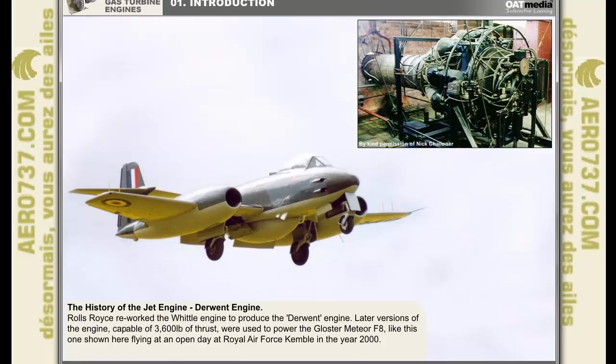Rolls-Royce reworked the Whittle design to produce the Derwent engine, an example of which is depicted here. This engine was capable, in its Mark IV version, of producing 2,450 pounds of thrust. Later versions of the engine, capable of 3,600 pounds of thrust, were used to power the Gloucester Meteor F8, like the one shown here flying at an open day at Royal Air Force Kemble in the year 2000.